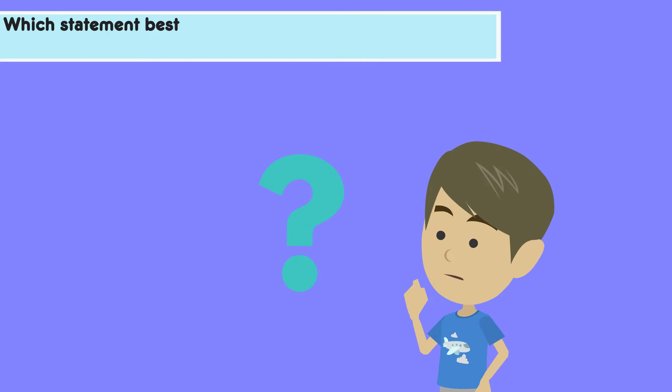Now let's evaluate our understanding with a key question. Which statement best explains why the sun appears to move across the sky during the day?